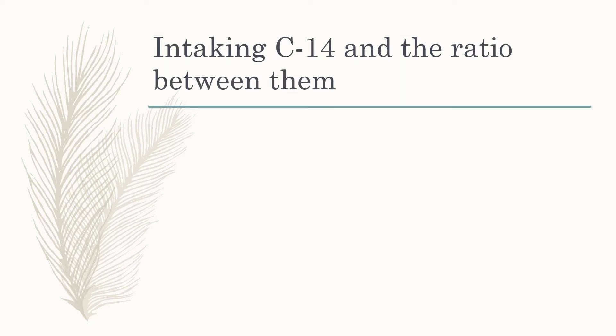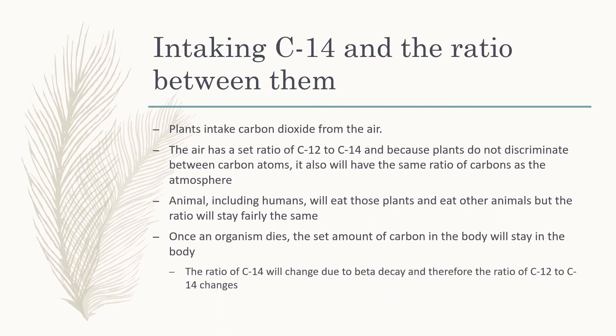So how do we intake this carbon-14 into our system? Plants intake carbon dioxide from the air. The air has a set ratio of carbon-12 to carbon-14, and because plants don't really choose what carbon atoms go into their system, the ratio in the atmosphere to their own bodies will stay fairly the same. The same is true for animals, including humans — we eat other organisms and plants, and because we are all still living, our ratios stay fairly the same.